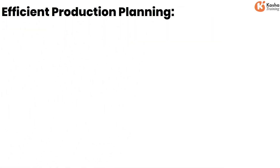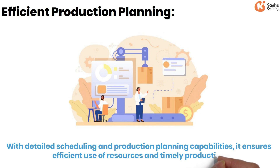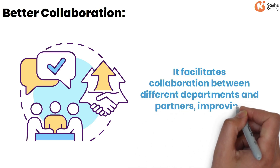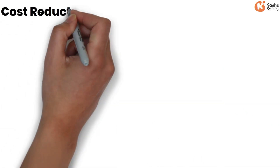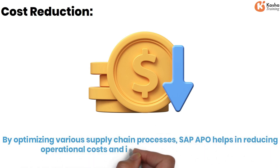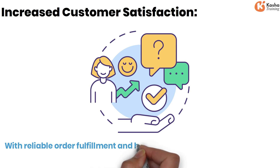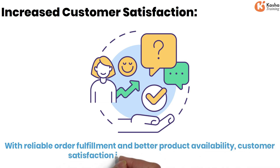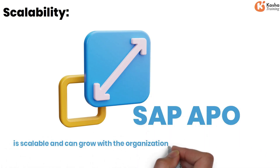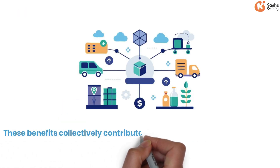Additional benefits include efficient production planning through detailed scheduling capabilities that ensure efficient use of resources and timely production. SAP APO facilitates collaboration between different departments and partners, improving coordination and reducing lead times. By optimizing various supply chain processes, it helps reduce operational costs and improve profitability. Reliable order fulfillment and better product availability significantly enhance customer satisfaction, and SAP APO is scalable to accommodate increasing complexity and volume.